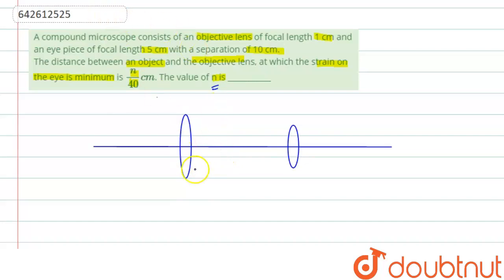In the question it is given, the distance between them is L which is equal to 10 cm. And the focal length of eyepiece, that is FE, is 5 cm and focal length of objective is 1 cm.